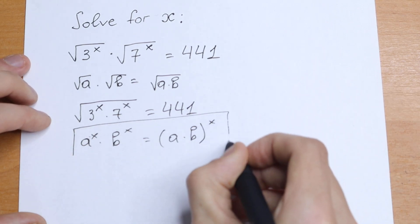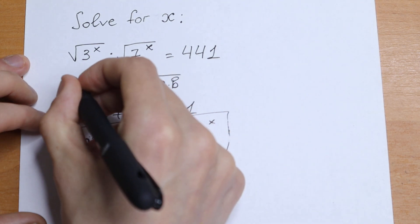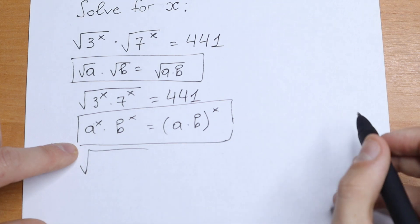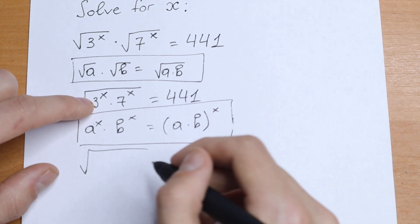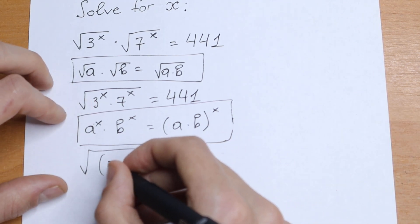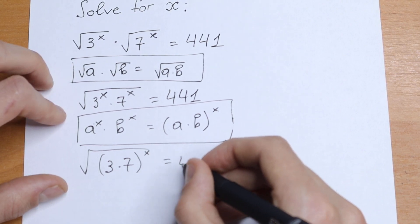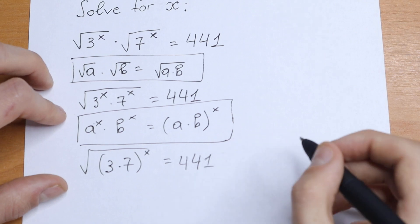Let's use these two rules right here. So what we will have? Square root, if under this square root sign we will have 3 times 7 to the power x equal to 441. Take a look.